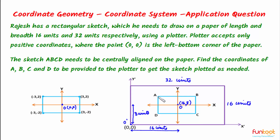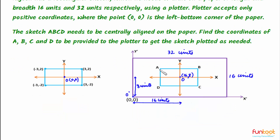Now it's very easy to find the coordinates of A, B, C and D. Let's start with A. The initial coordinates of A were (-3, 2). So point A is horizontally 3 units to the left, giving an X coordinate of 16 minus 3, and it is vertically 2 units up, giving a Y coordinate of 8 plus 2. So the coordinates of A become (13, 10).